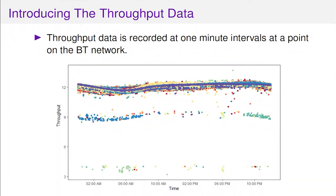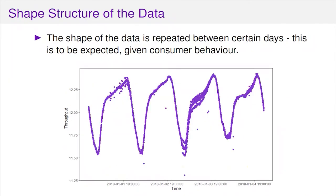It's hard to pick out anything from that data in itself. However, if we look at it over time, we see there's more or less a repeated shape between certain days, and of course that's to be expected because consumer behaviour is similar over certain days. In the middle of the night there probably isn't loads of people streaming things, whereas in the evenings after work or on a weekend, usage and therefore throughput is higher. This repeated shape is going to form the very foundation of the FAST idea.